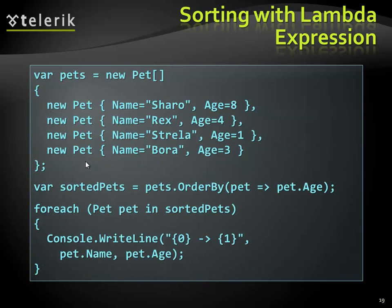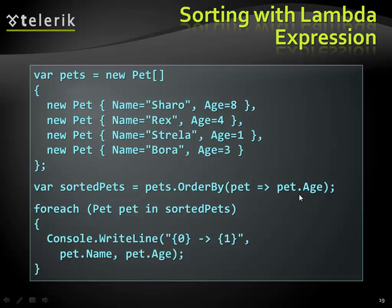Question: are lambda expressions usually Boolean functions? Yes and no. Here we have a 'Pet' type — an array of pets, each with a name and age. We're calling the OrderBy method, and we have to determine which property to order by. For each element in the list or array, we return 'pet.Age'. So we'll be ordering them by the Age property — this is not a Boolean. Then we're just traversing through them and printing the name of each pet.